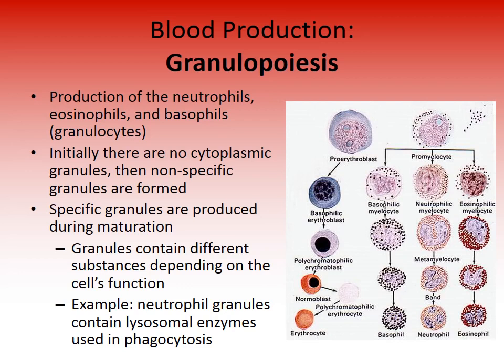During granulopoiesis, initially there are no cytoplasmic granules. Nonspecific granules form first, and then specific granules are produced during maturation — each containing substances specific to that cell's function. For example, neutrophil granules contain lysosomal enzymes to support their phagocytic function, enabling them to destroy bacteria and viruses that have been engulfed.